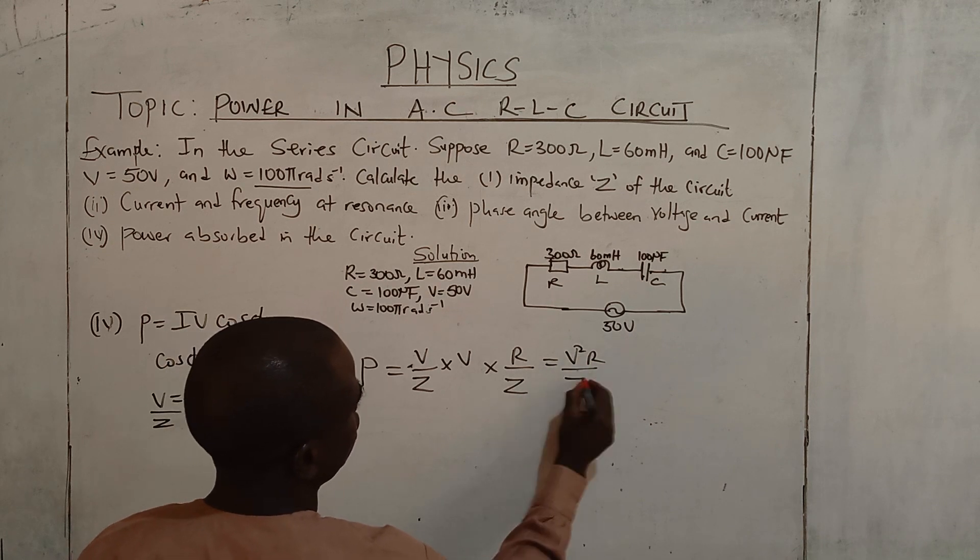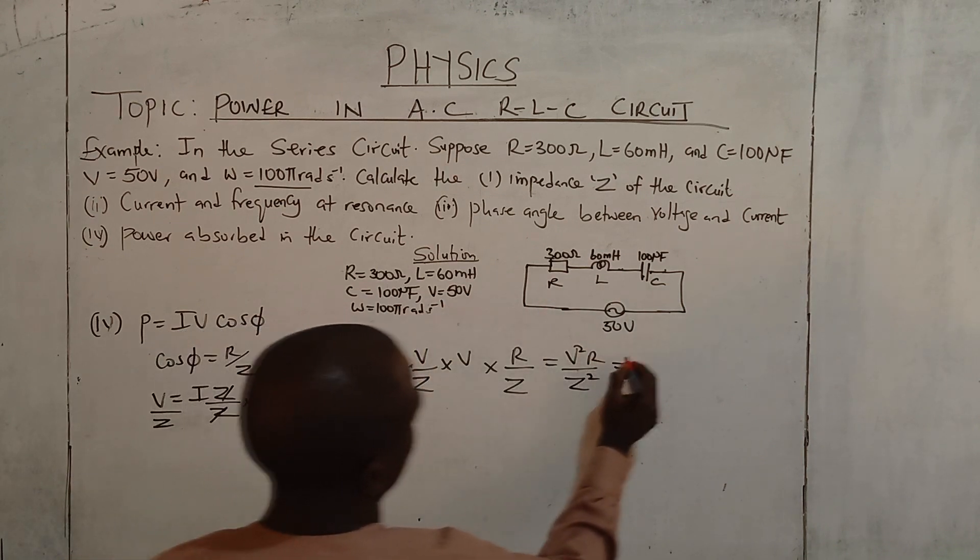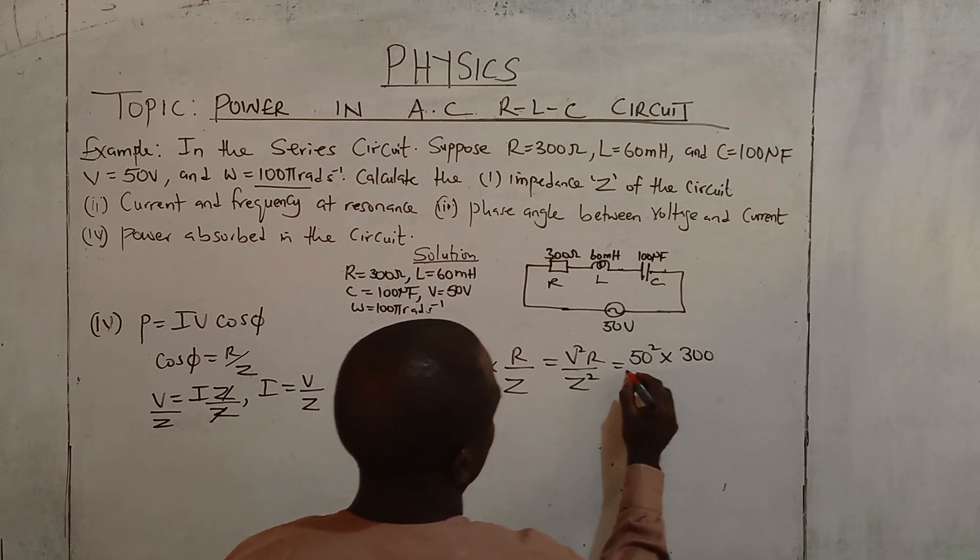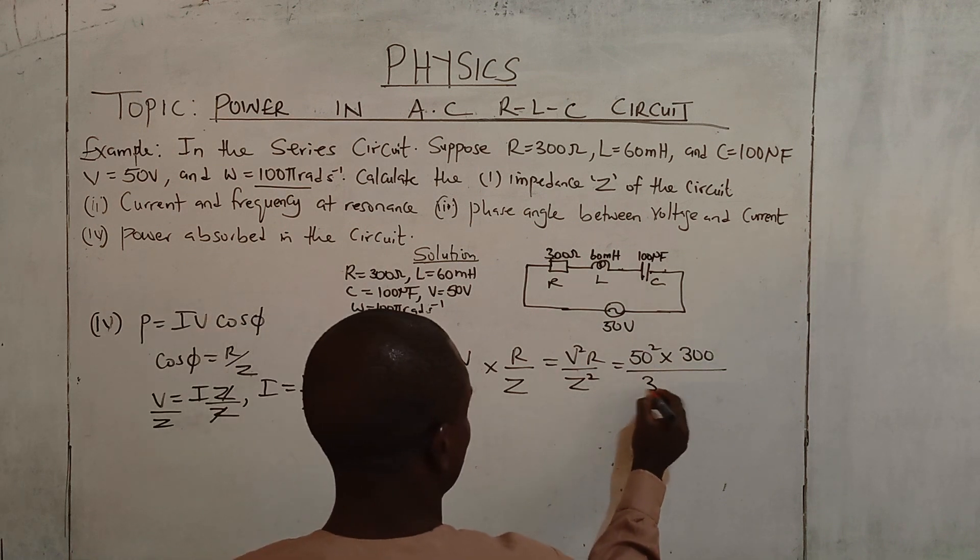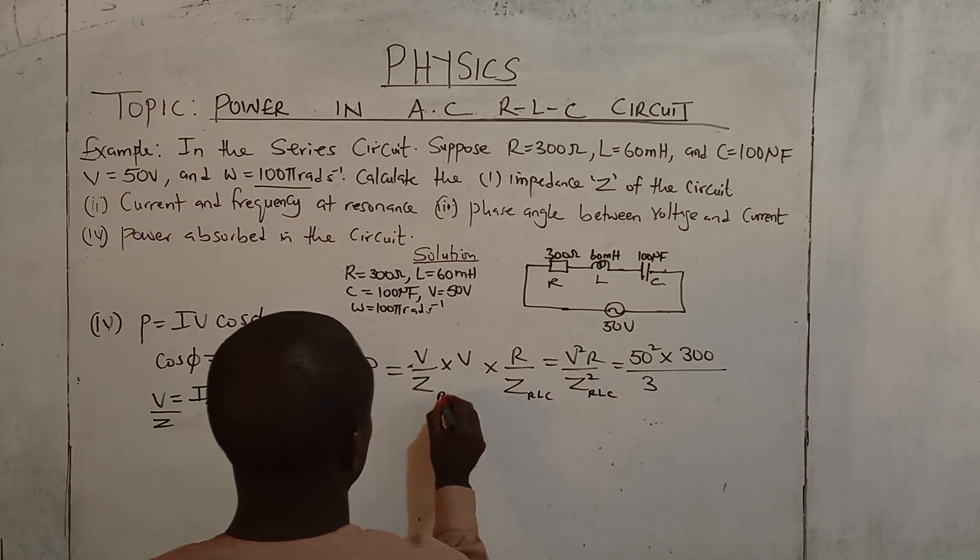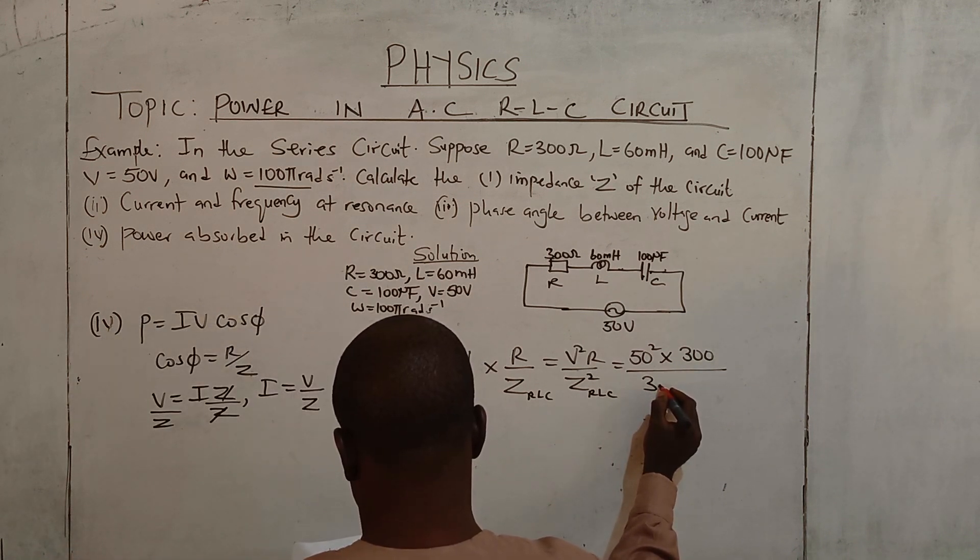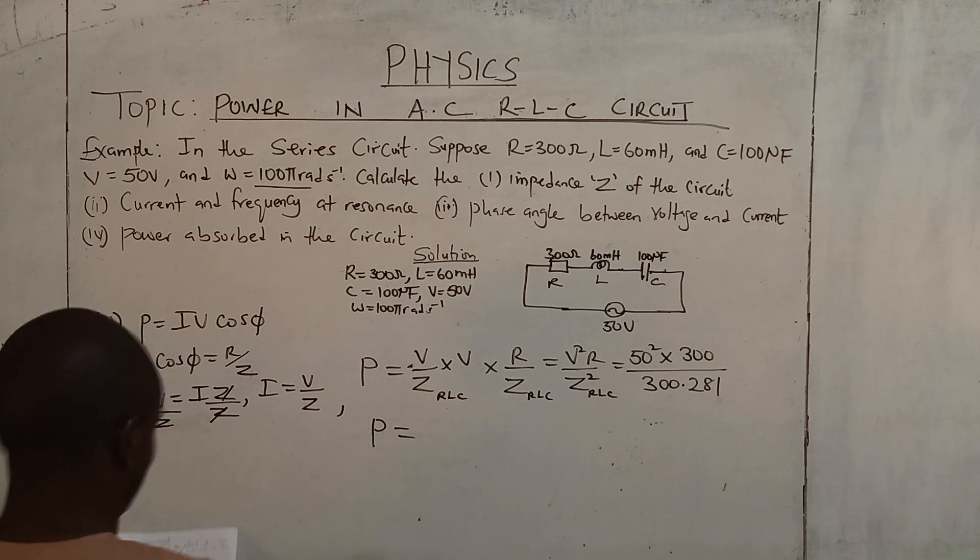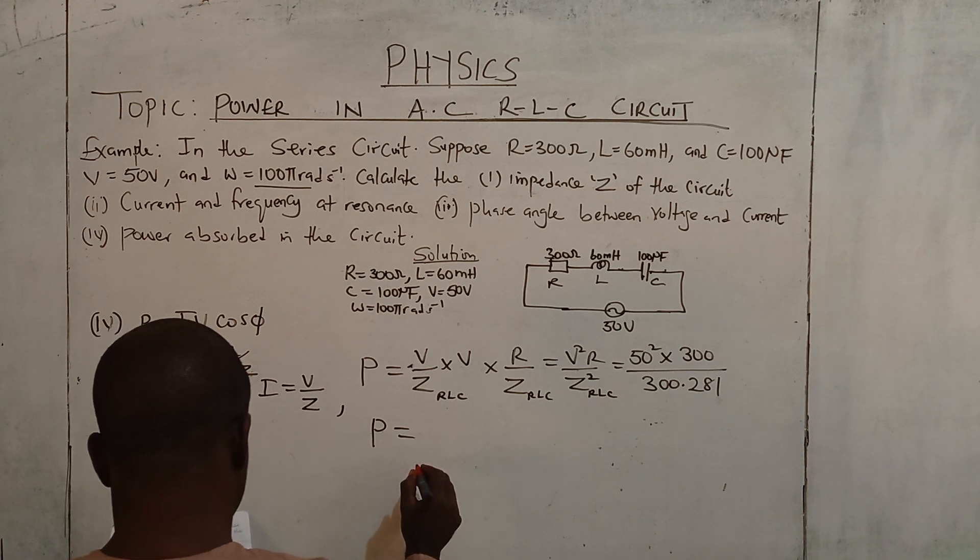What is V? V is 50. This applies, 50 squared over R 300 times Z. Z we got it previously, 300.281 impedance RLC. We have 8.31 watts. That is the power absorbed.